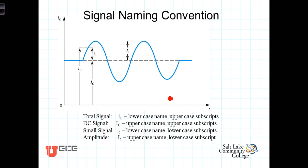Let's describe that naming convention, or a common naming convention that's used, that involves both uppercase and lowercase variable names and subscripts. You'll see here, we're talking about some current that's called I sub C.